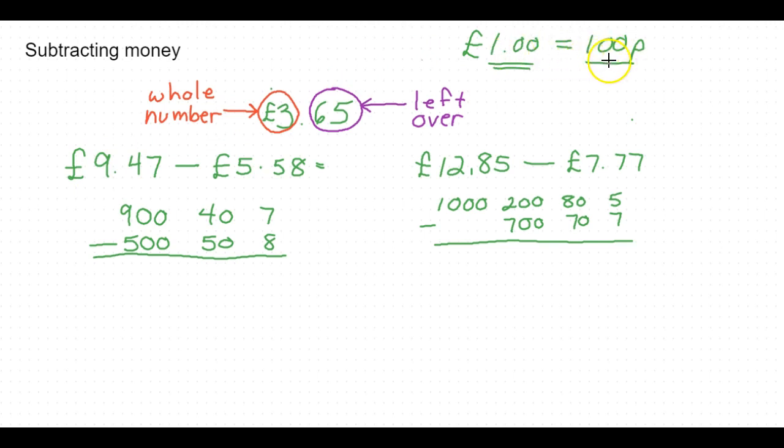So that's why we've got 900 here. And the 47 is because it's less than 100, so that's what's left over. And it's subtracting five pound 58. So again, our whole number here is five. That means that we've got five sets of a hundred.